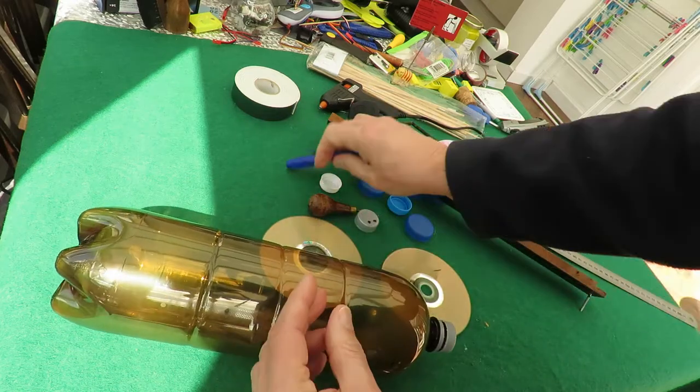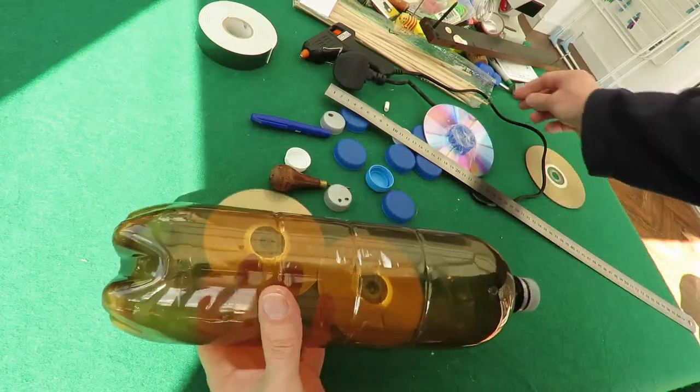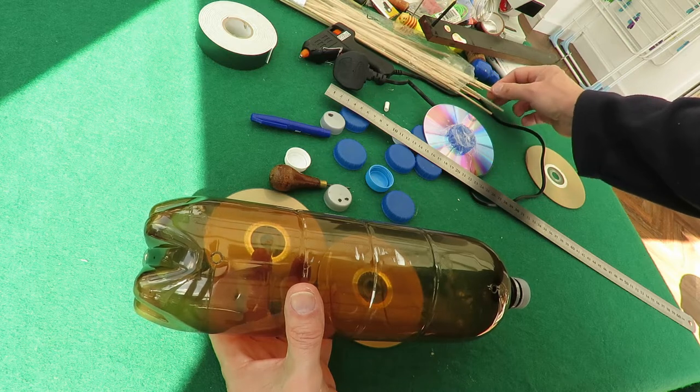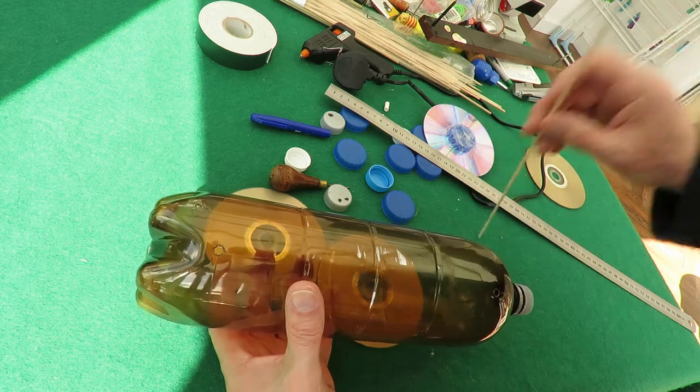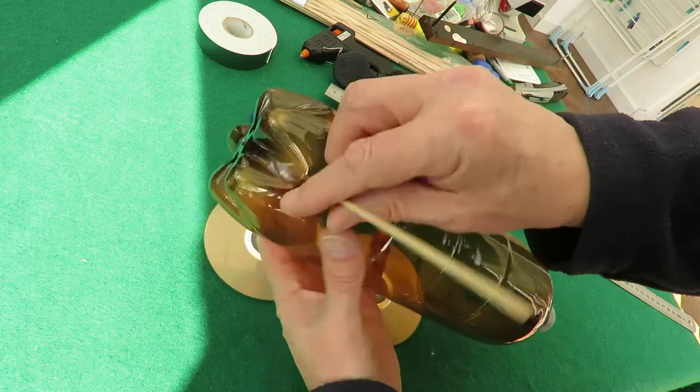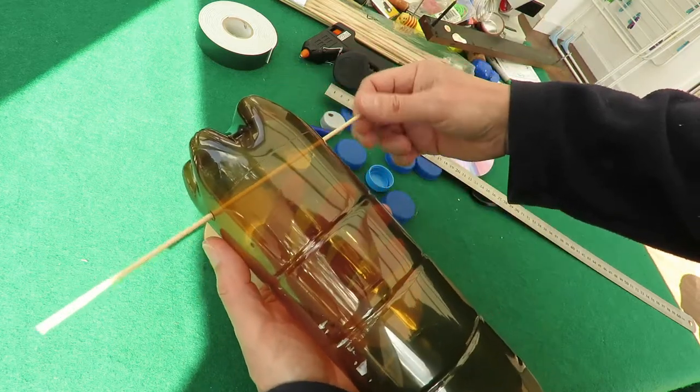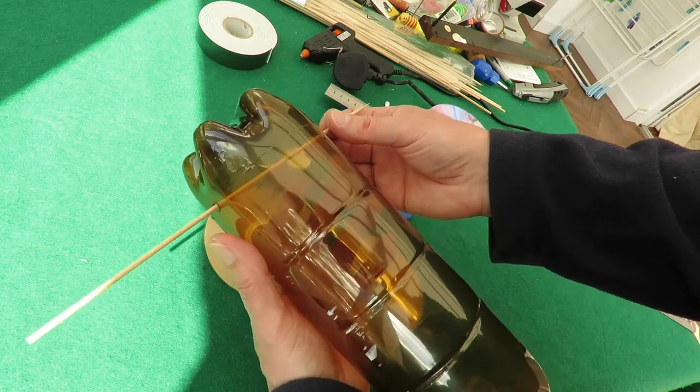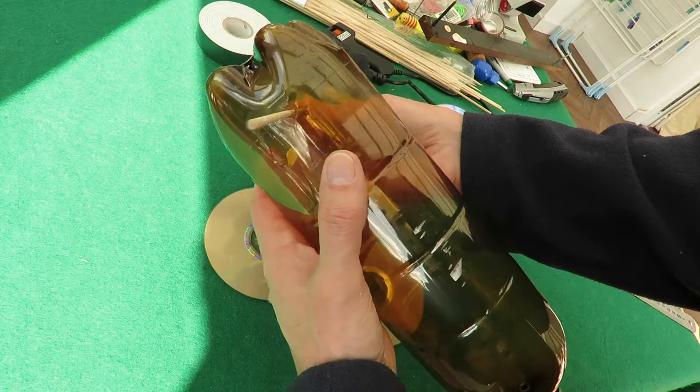So I'll go and do that. So we've got some nice holes in there. Barbecue skewers, and they are a nice loose fit in those holes. If they're tight, it's no good at all—your car won't go. It needs to be a good loose fit.